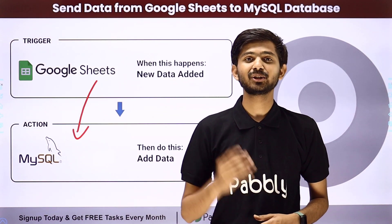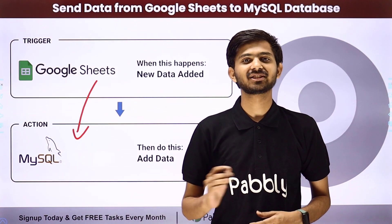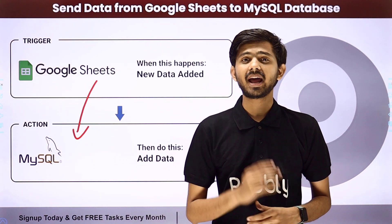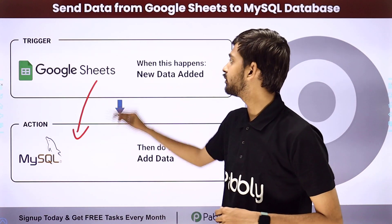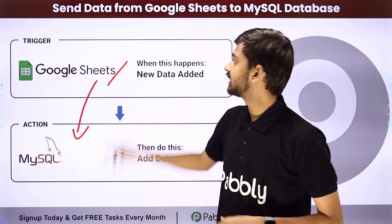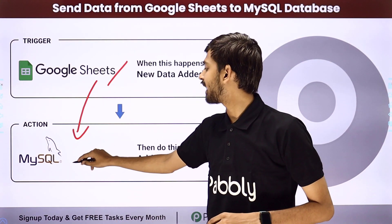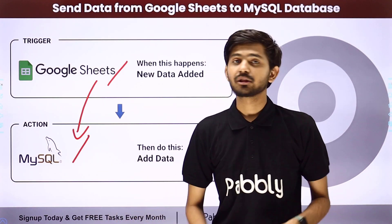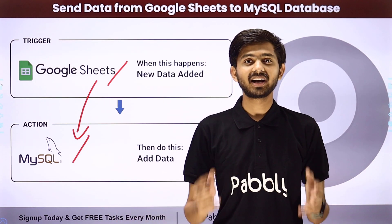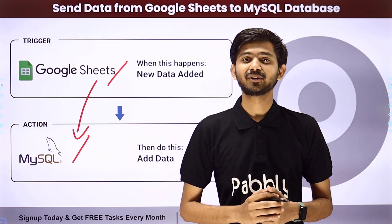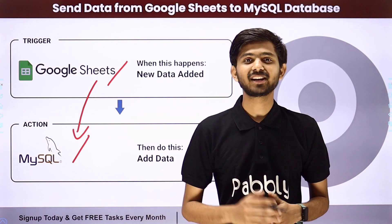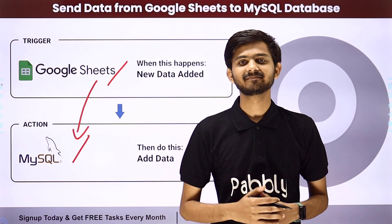In Pabbly Connect, I'm going to use Trigger and Action. In the Trigger application, I'm going to use Google Sheets, and in the Action application, I'm going to use MySQL. Let me take you to my computer screen to show how I'm going to create this integration.